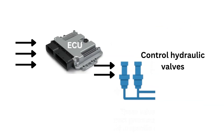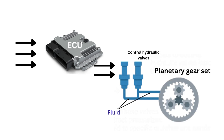Step 3: Based on the data received, the ECU sends signals to control hydraulic valves inside the transmission. These valves direct pressurized fluid to specific clutches and bands within the planetary gear set, engaging the appropriate gear ratio.